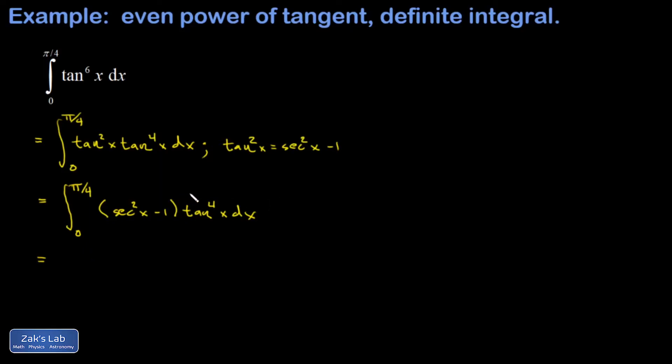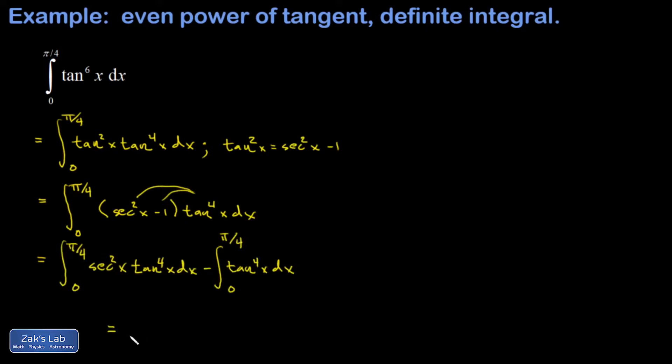Then I'm going to distribute the tangent to the fourth to both those terms and break the integral apart. We'll do a couple of things at once in the next step. In the first integral, I notice that I have the derivative of the tangent function sitting right next to a power of the tangent function.